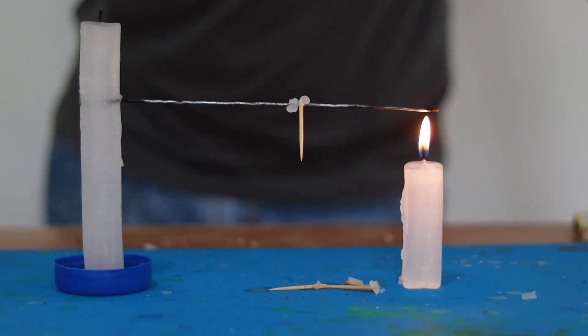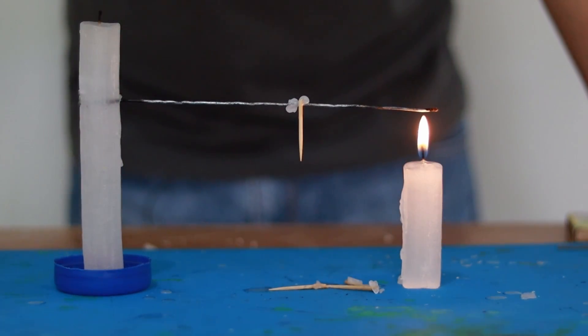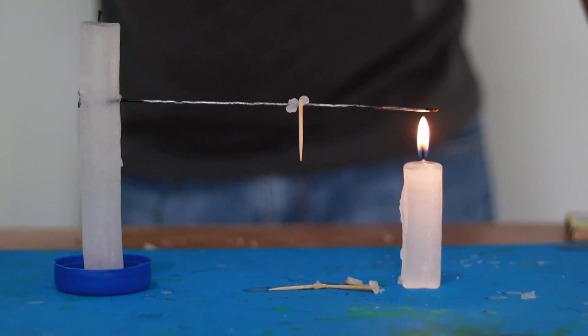The big one is taking longer to fall because it is further away from the hot spot, which is the candle.